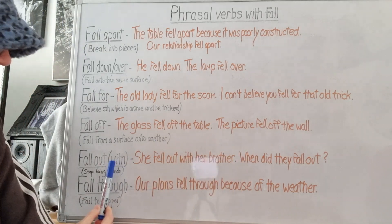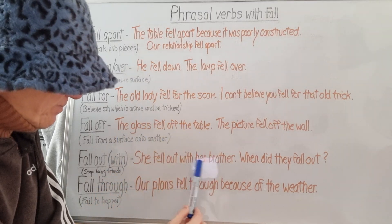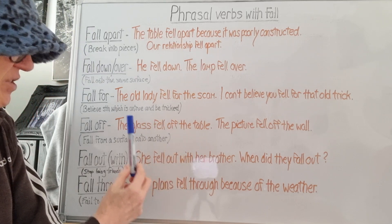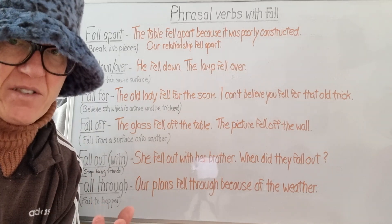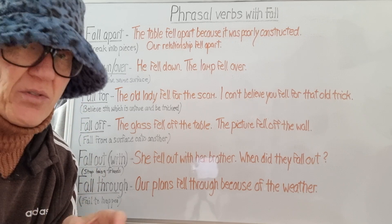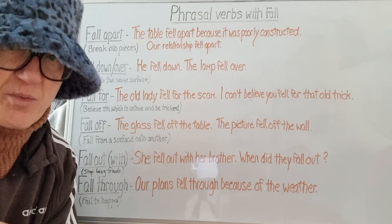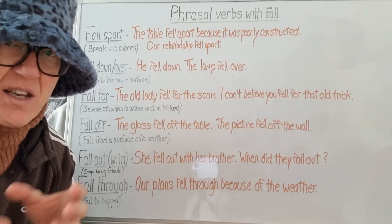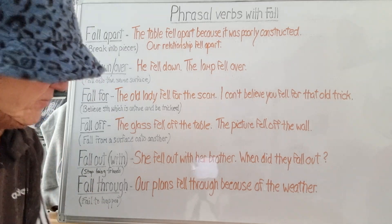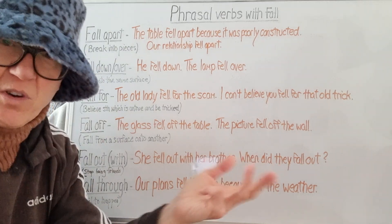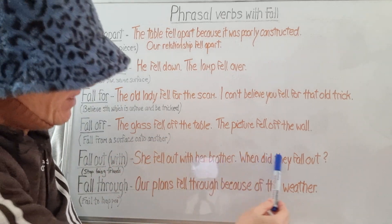You'll notice 'with' is in brackets. That's because if you have an object, you must use 'with'; if you don't have an object, you don't use 'with.' This is common for several phrasal verbs — not all of them, but those with two particles. Sometimes the second particle is only used when there's an object. So: she fell out with her brother — when did they fall out? When there's no object, the subject must be plural because you can't fall out with yourself.